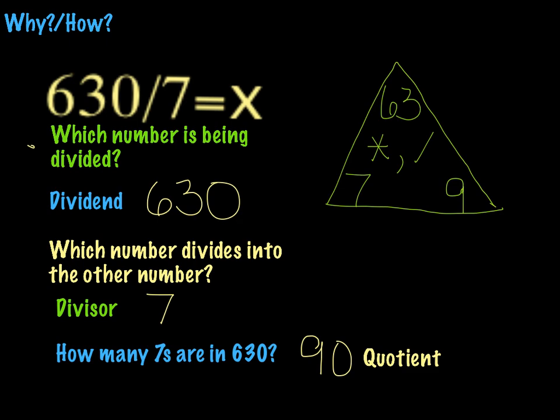However, we can look at this fact triangle and I could cover up the 9 and you could tell me 63 divided by 7 and figure out that that was 9. Or I could cover up the 7 and say 63 divided by 9 and you would tell me 7 because you're awesome.